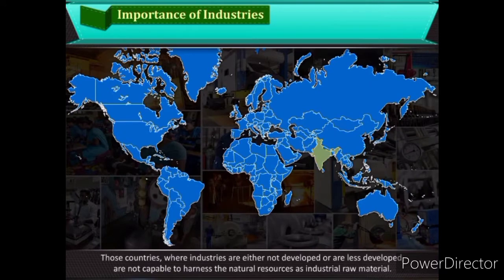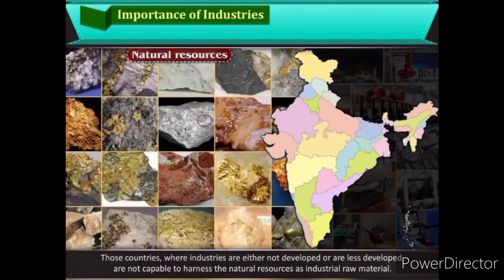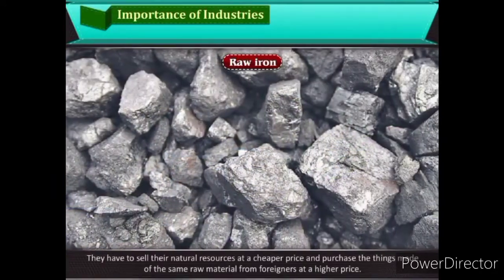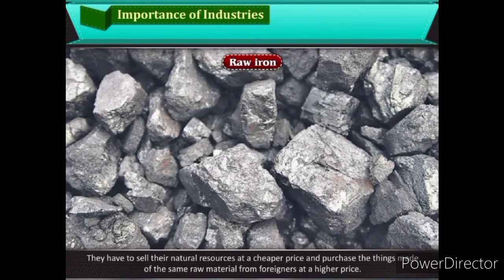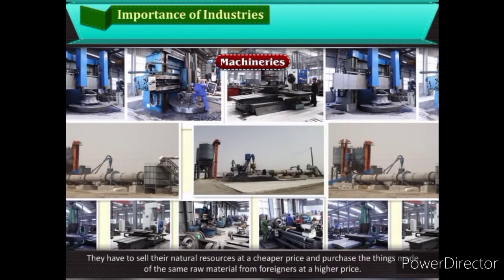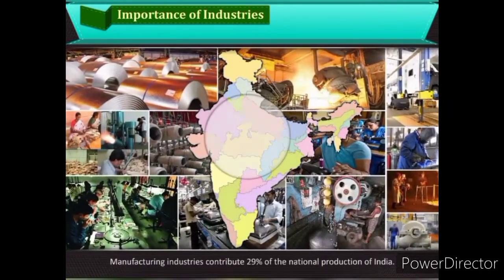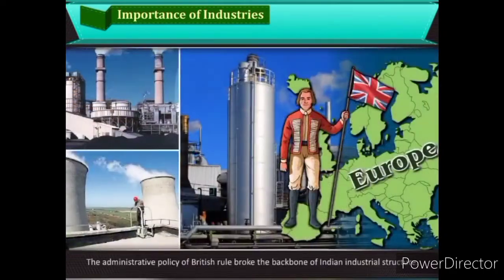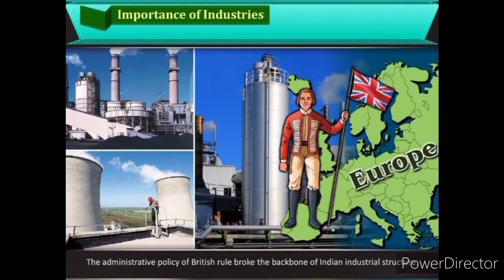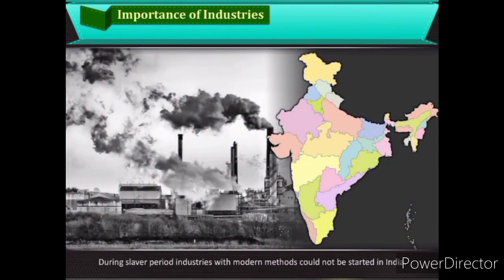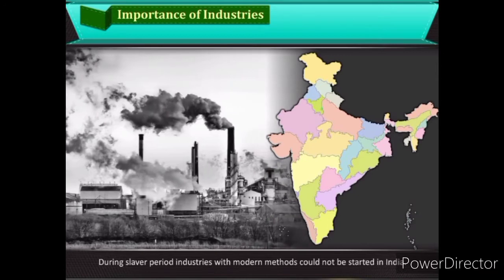Those countries where industries are either not developed or are less developed are not capable of harnessing natural resources as industrial raw material. They have to sell their natural resources at a cheaper price and purchase goods made of the same raw material from foreigners at a higher price. Manufacturing industries contribute 29% of the national production of India. The administrative policy of British rule broke the backbone of the Indian industrial structure, and during the slavery period, industries with modern methods could not be started in India.